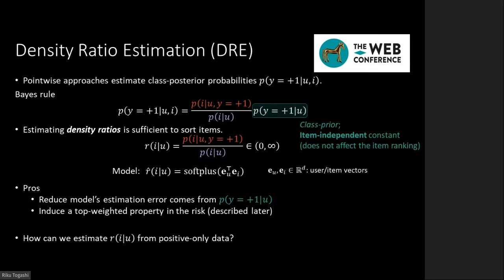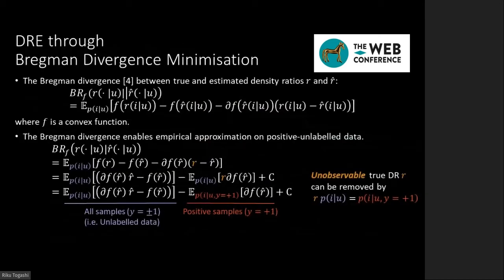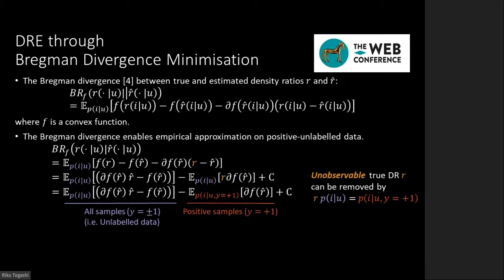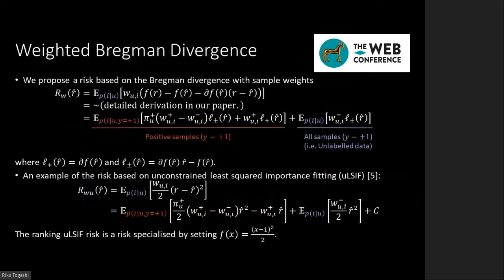The benefit of this approach is that we can reduce the model's estimation error from estimating the class prior and induce a top-weighted property in the risk. To estimate density ratios from positive-only data, we use the Bregman divergence, a class of distance-like functions which includes the Kullback-Leibler divergence. The Bregman divergence between true and estimated density ratios can be empirically approximated with positive and unlabeled data. The unobservable true density ratio can be removed, and the resulting risk has expectations over positive and unlabeled samples. Hence, the Bregman divergence can be empirically approximated using implicit feedback data. By minimizing the Bregman divergence, we can directly estimate the true density ratio by a model R-hat. By following the conventional pointwise approach, we extend the risk based on the Bregman divergence to enable the use of sample weights. We develop a specialized risk based on unconstrained least-squared importance fitting.